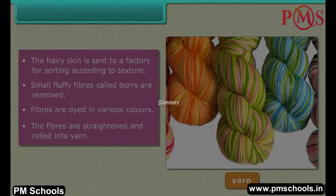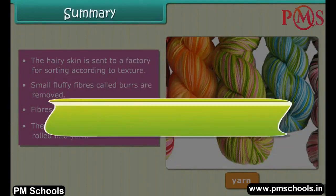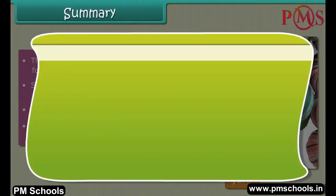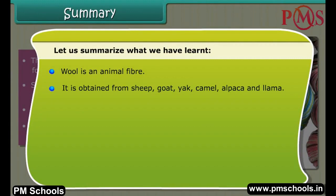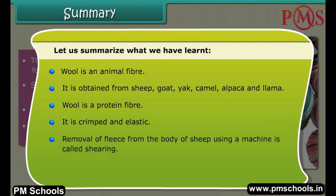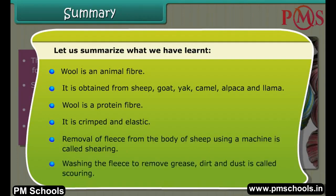Let us summarize what we have learned. Wool is an animal fiber obtained from sheep, goat, young camel, alpaca, and llama. Wool is a protein fiber — it is crimped and elastic. Removal of fleece from the body of sheep using a machine is called shearing. Washing the fleece to remove grease, dirt, and dust is called scouring.